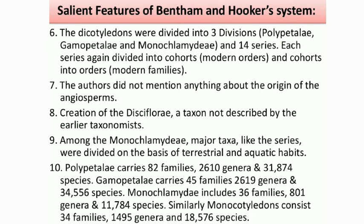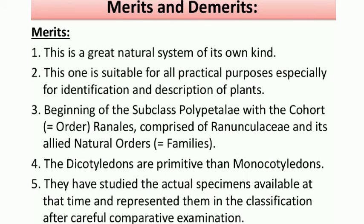These are some of the salient features of Bentham and Hooker's system of classification. Looking at merits and demerits — first, the merits. This is a great natural system of its own kind. Natural means it has been framed based on the natural affinities of plants — the characters observed in nature without any modification.